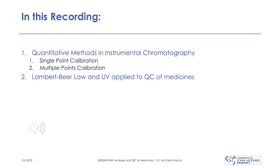In this recording, we will be looking at two types of basic quantitative methods in instrumental chromatography: single point calibration and multiple points calibration. And secondly, we will see an example of how to apply the Lambert-Beer law to UV applied to quality control of medicines.